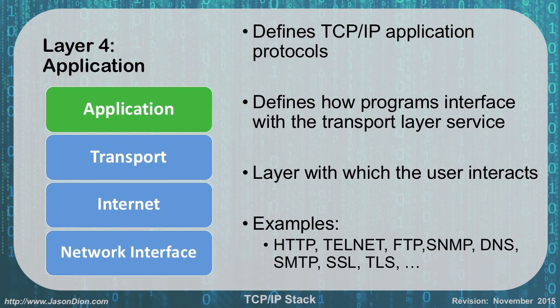The final layer: we take the top three layers of the OSI model — application, presentation, and session — and slap them all together and call it application. In this layer, we're dealing with how programs interface with the transport layer services and how the user is going to interact with it as well. We have HTTP, Telnet, FTP, SNMP, DNS, SMTP, TLS, and SSL. We're doing data types, session establishment and disestablishment, applications, and encryption. All of that stuff from the top three OSI layers is being done in this single layer here.